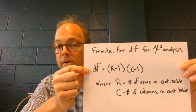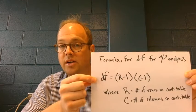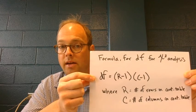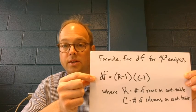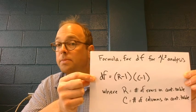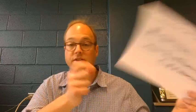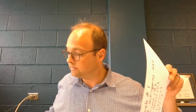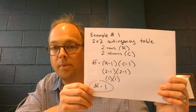You take the number of rows in your contingency table, subtract one, take the number of columns, subtract one, and then multiply those two together. Example number one: sex and poverty level.